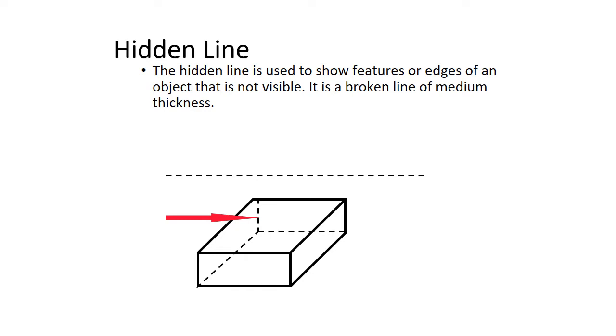These are the lines on an object that we can't see from the view. We know they're there, but we've got to represent them. But if we put them as an object line, it would make things ultra confusing. In our grammar or language of lines, we use hidden lines, which are dashed lines, to show features that we can't see from that direction or view.